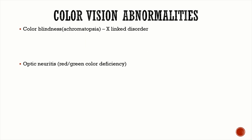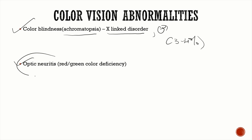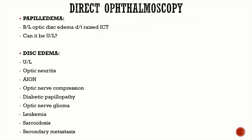For color vision abnormalities: the most common is color blindness, also known as achromatopsia — an X-linked disorder seen in males, affecting around 3 to 4% of all males. In optic neuritis, the first color vision abnormality is red desaturation, which is very important. Green color deficiency can also occur, but red desaturation is the first and most significant finding.